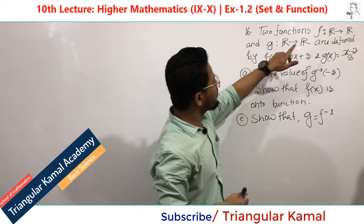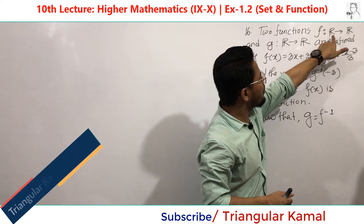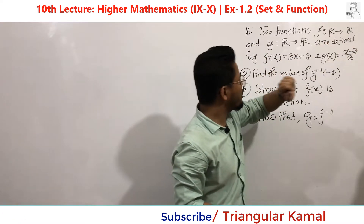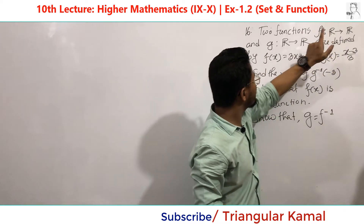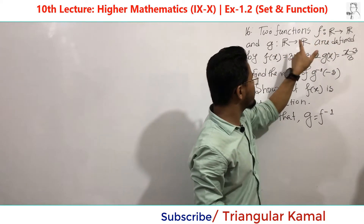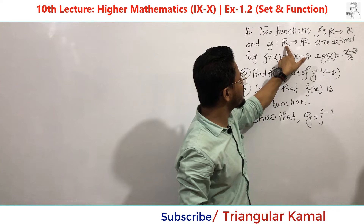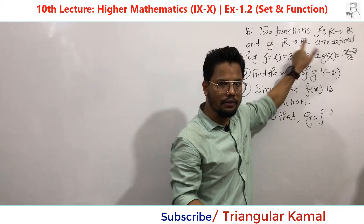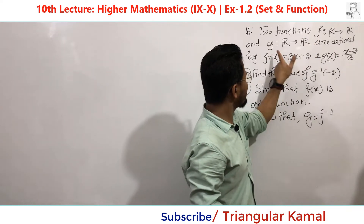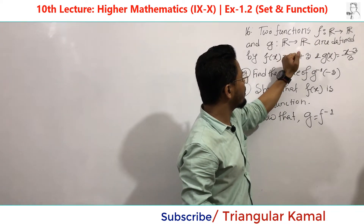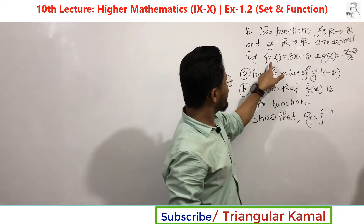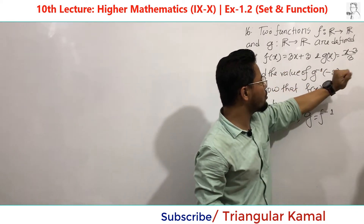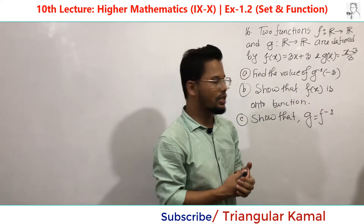Here we see two functions. F is defined from the set of all real numbers to the set of all real numbers. Both F and G functions have domain of real numbers and co-domain also the set of real numbers — both F and G indicate R to R. The function F of X equals 3 times X plus 3, and G of X equals X minus 3 divided by 3.